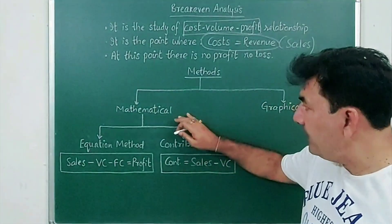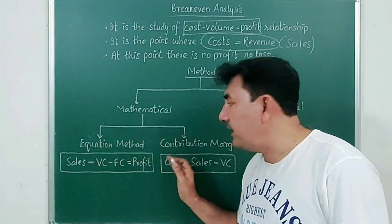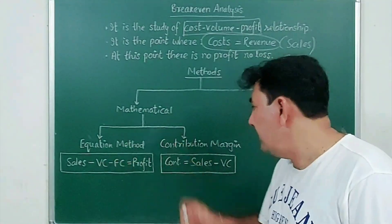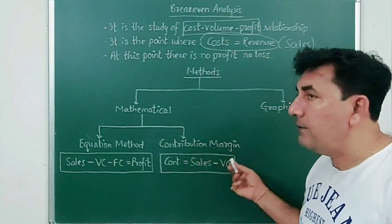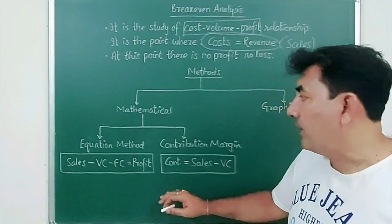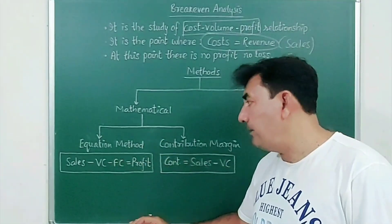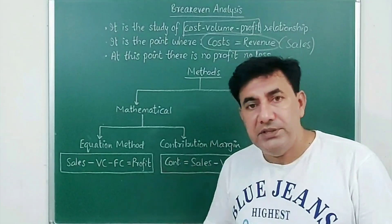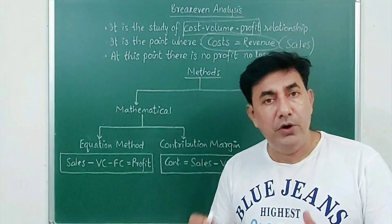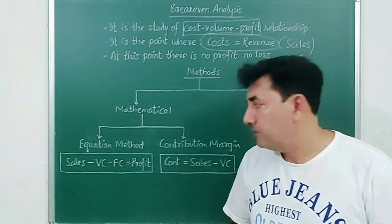In the mathematical method, this method is again divided into two parts. One is the equation method and the other is the contribution margin method. In the equation method, as the name implies, we use an equation for break-even analysis.